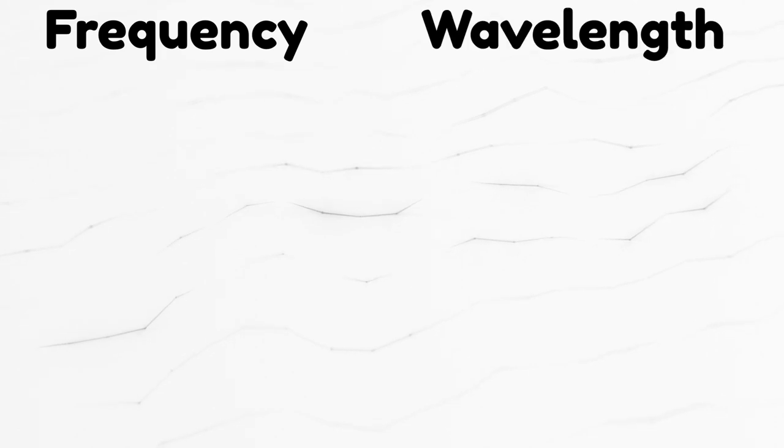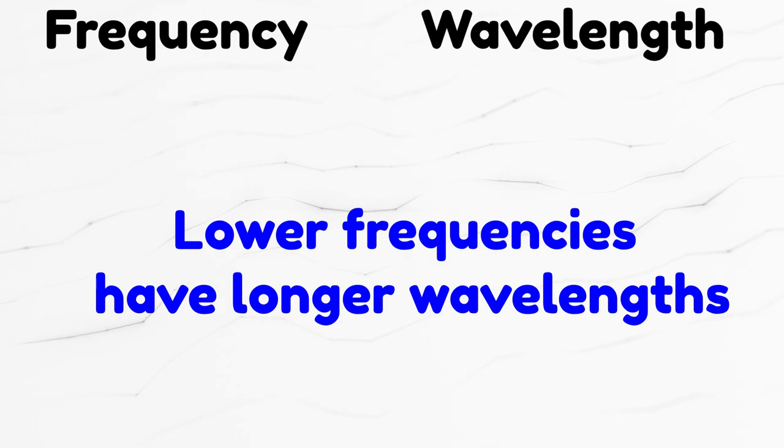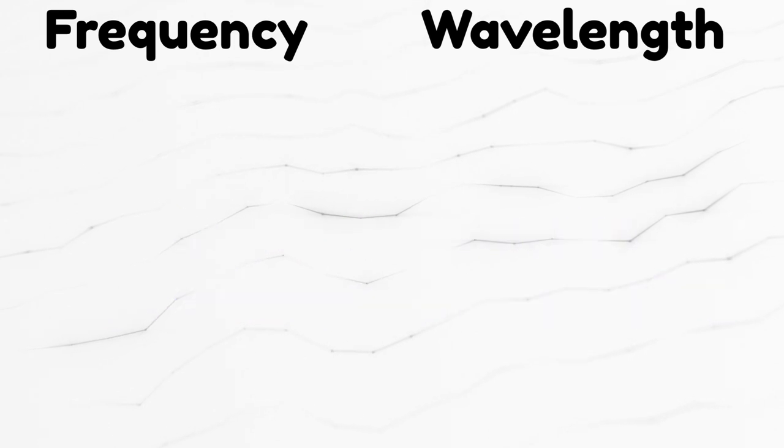Music is composed by many frequencies and each frequency has its own wavelength. So lower frequencies have longer wavelengths. Since we hear from 20 Hz to 20 kHz, here are some examples.